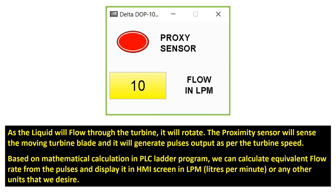In this example I have created a simple HMI screen. Because we don't have a hardware proximity sensor, I have created one momentary button in the HMI through which I will click with the mouse and give input to our PLC program. I have also created one numeric display which will display our output flow in liters per minute. This is all done through a mathematical code that we will write in the programming.